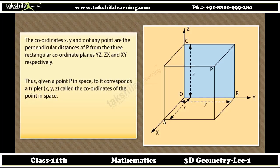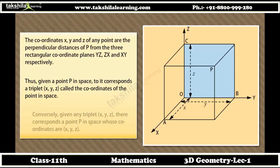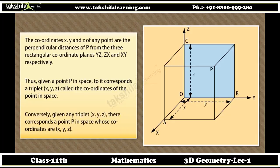Thus, given a point P in space, to it corresponds a triplet (X, Y, Z) called the coordinates of the point in space. Conversely, given a triplet (X, Y, Z), there corresponds a point P in space whose coordinates are (X, Y, Z).